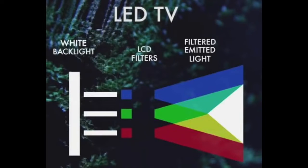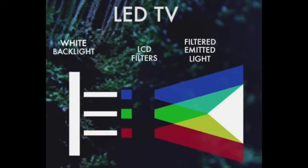We start with the most commercialized and basic technology, which is the LED or light emitting diode. This technology can be found in all brands of televisions — LG, Samsung, Sony, Hisense, Philips, all of them. LED TVs are the cheapest and most common of these three groups. If we go to a store, most of the TVs we will see will be LED, and if we want something cheap it will also be LED.